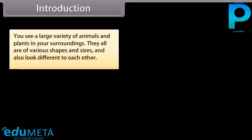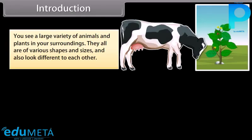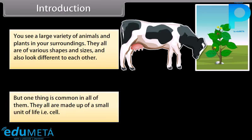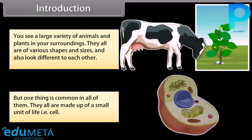Introduction: You see a large variety of animals and plants in your surroundings. They all are of various shapes and sizes and also look different from each other. But one thing is common in all of them — they all are made up of a small unit of life, that is, the cell. In this module, we are going to learn about the cell and its structure.